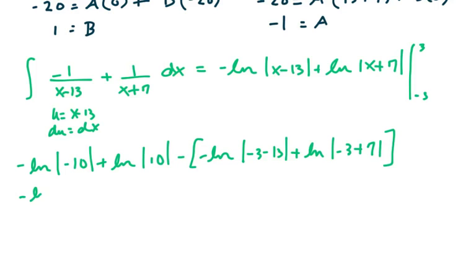This is just minus ln of 10 plus ln of 10, which is going to cancel out and go to 0. Left with minus minus ln the absolute value of minus 16 plus ln of 4.